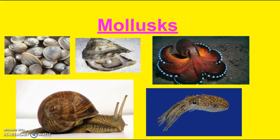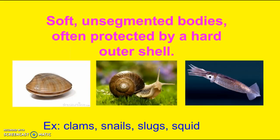Hi there, Mrs. Young here, and today we are going to talk about mollusks. Mollusks have soft, unsegmented bodies, and they're often protected by a hard outer shell. Some examples would be clams, snails, slugs, or squid.